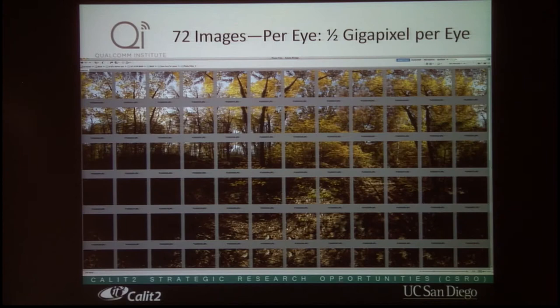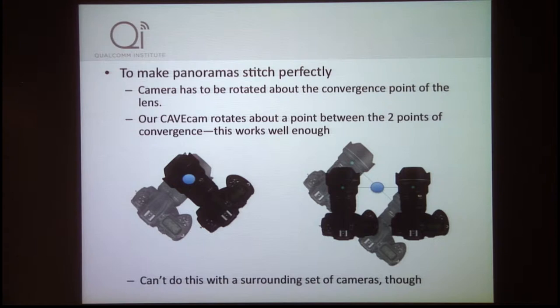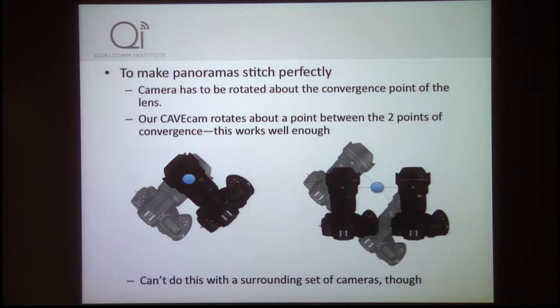The way we do these things is we take pictures with this camera rig — that's in Luxor, Egypt, a couple of years ago. We get 72 images per eye, two eyes, so it's about a half a gigapixel per eye image, very high resolution. The problem is it's on a rig that we have to put on a tripod, and most places you have to get a permit to do that. So we want to build a camera that takes all 144 images at once — there's a picture of it. But the problem is it's impossible to do it that way. The issue is making the panoramas stitched, making the images fit together. The camera has to be rotated around the convergence point of the lens, which is really not the film plane but where the beams come together in the lens. With our system we pick a point in between, which is not perfect but works well enough, as you've probably noticed from these images. But we can't do this with a surrounding set of cameras.